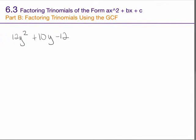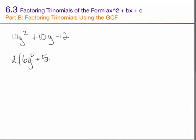Before we factor this trinomial, take a look at the terms. Each one is divisible by 2, so the entire polynomial has a greatest common factor of 2. What do I need to multiply by 2 to get 12y squared plus 10y minus 12? Now that I've done that, I can see there's nothing else common to all three of these terms, and I can carry on factoring it as before.